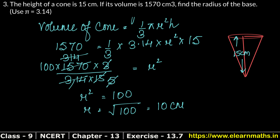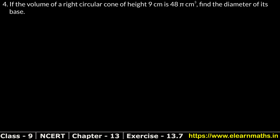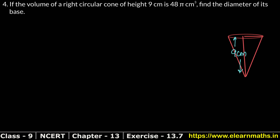So we had to find the radius of the base of the cone. The answer is 10 cm. Now let's do question number 4 of exercise 13.7, that is surface area and volume. Question number 4: if the volume of a right circular cone of height 9 cm is 48π cm³, we have to find the diameter of its base.